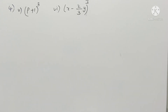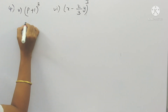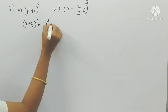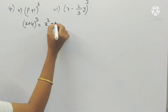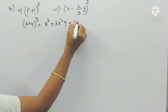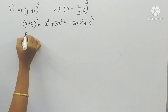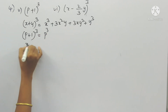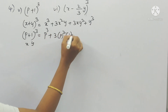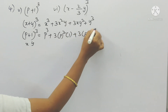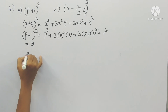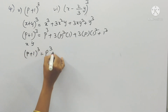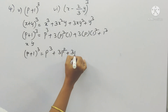Fifth one: (p + 1)³. By looking at this problem it is in the form of (x + y)³. The formula is x³ + 3x²y + 3xy² + y³. So (p + 1)³ = p³ + 3·p²·1 + 3·p·1² + 1³. Finally, (p + 1)³ = p³ + 3p² + 3p + 1.